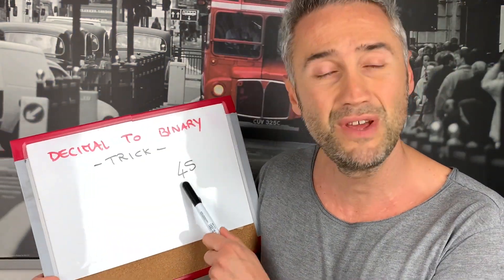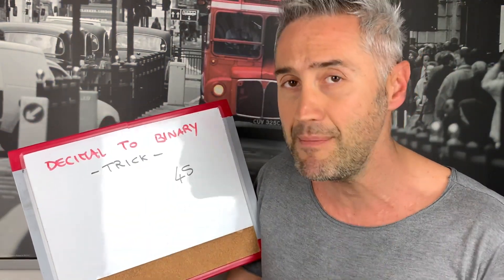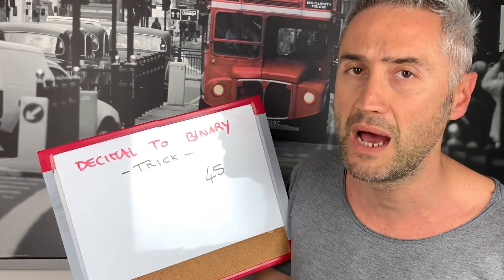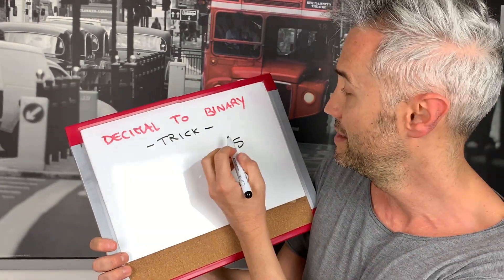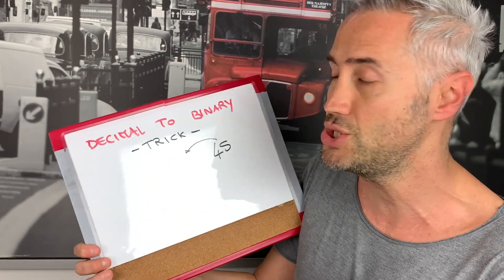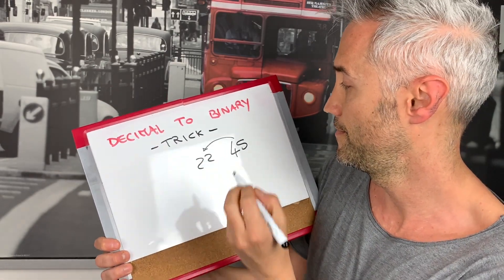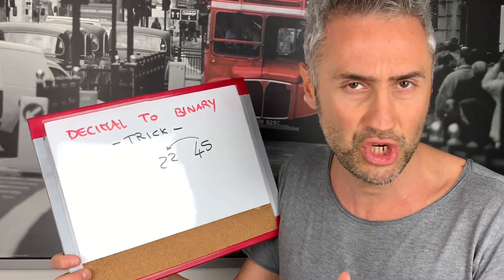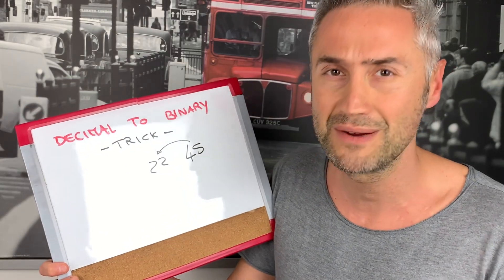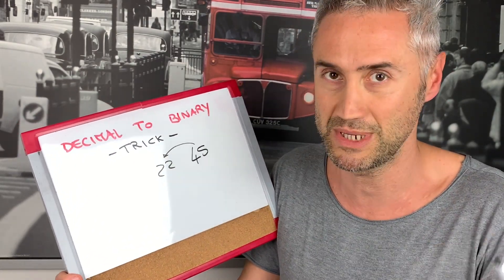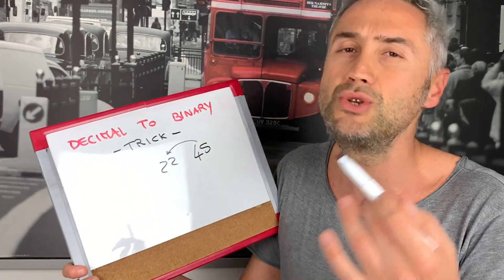Step 1: we are going to divide the number in half and ignore the remainder. So 45 divided by 2 is 22, with a remainder of 1, which we ignore. We are going to keep repeating this process until we get to the number 1.